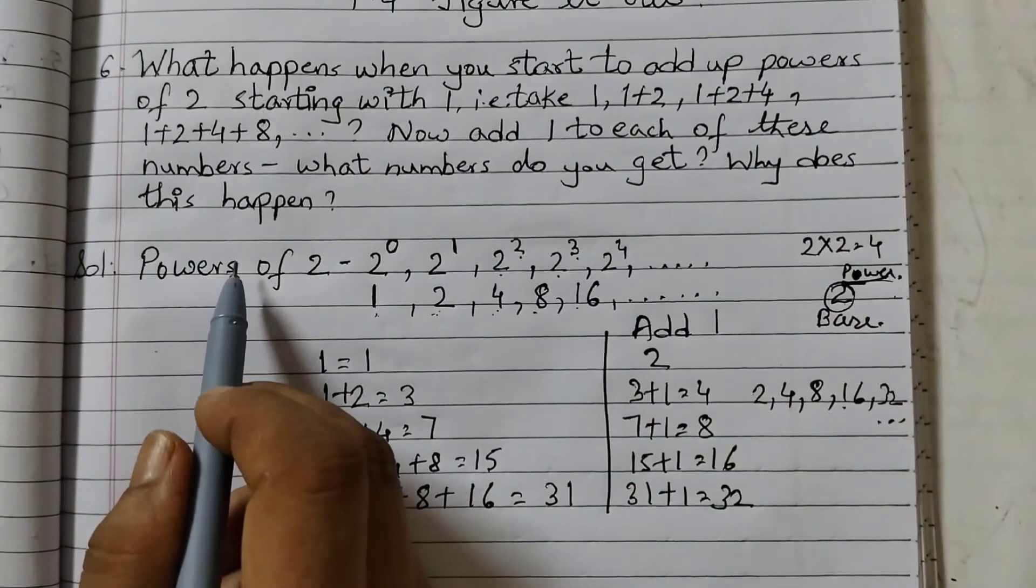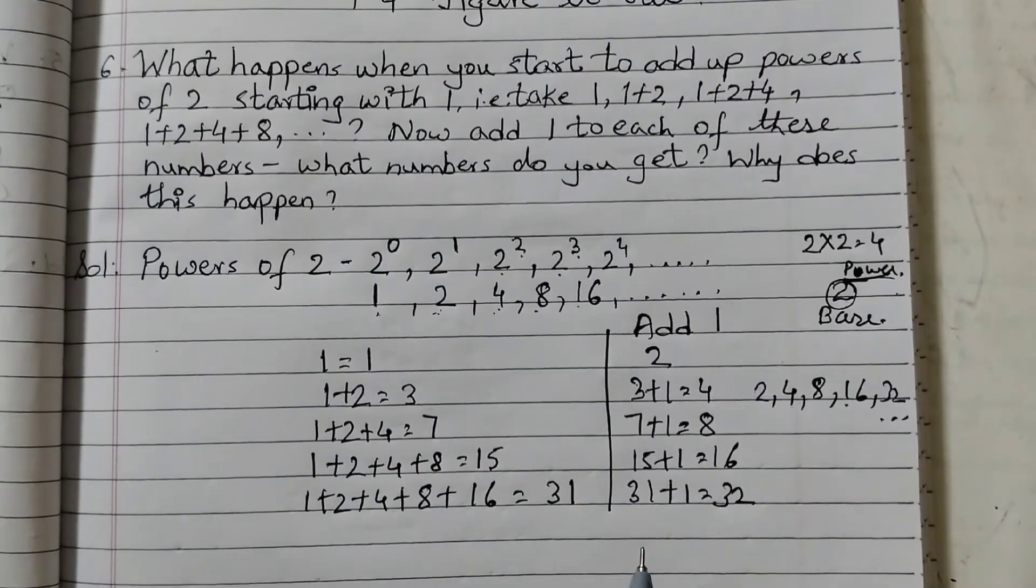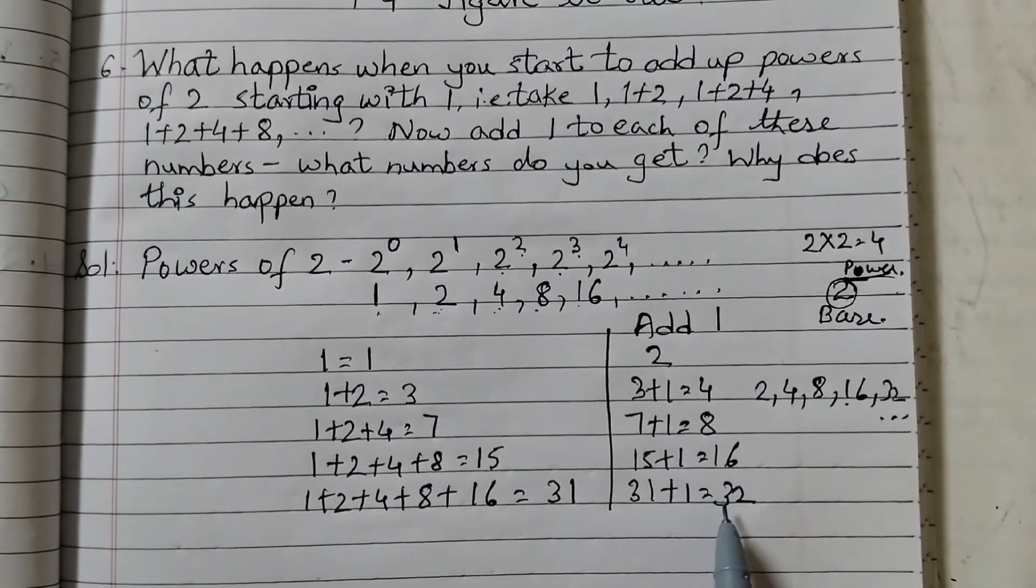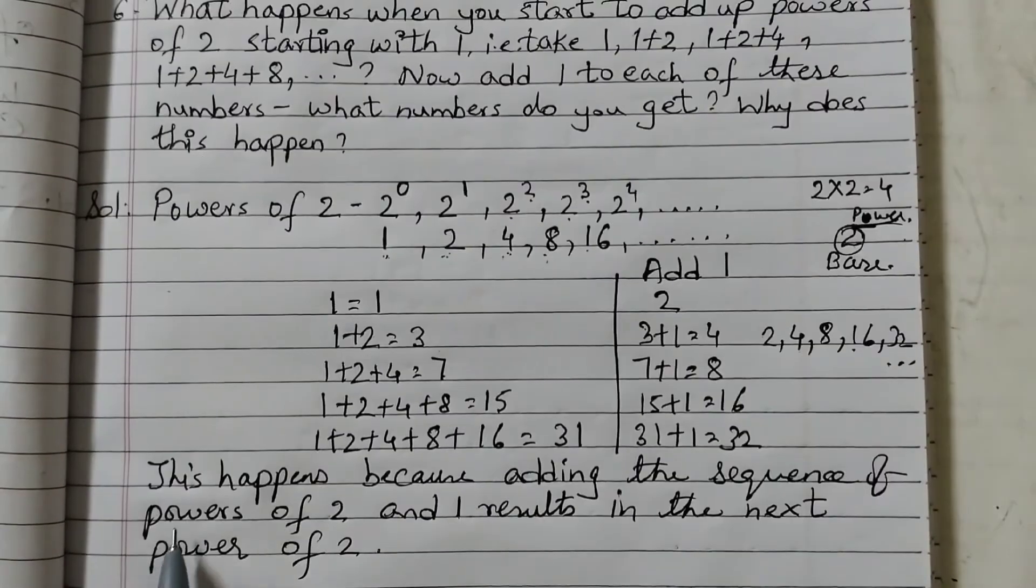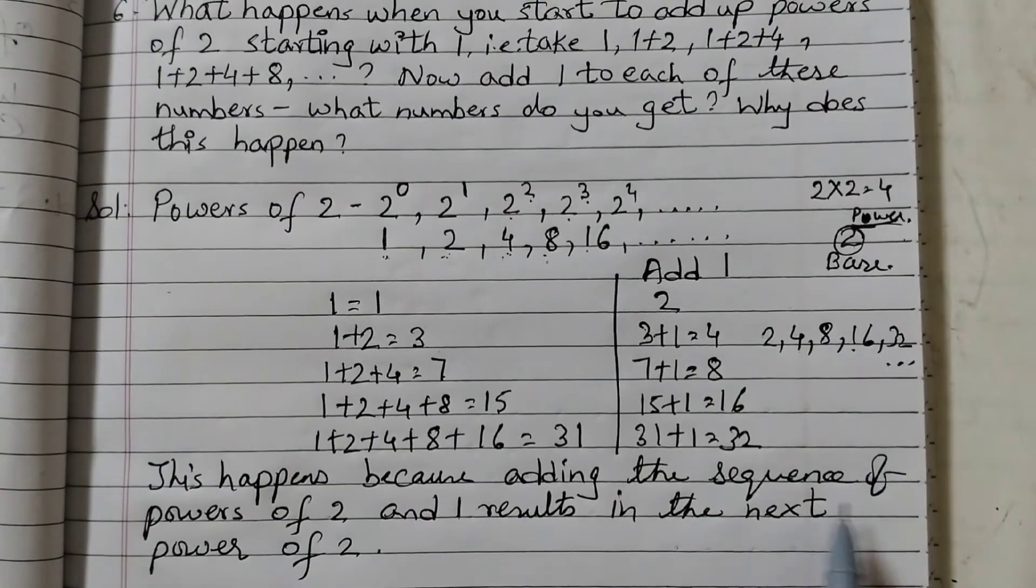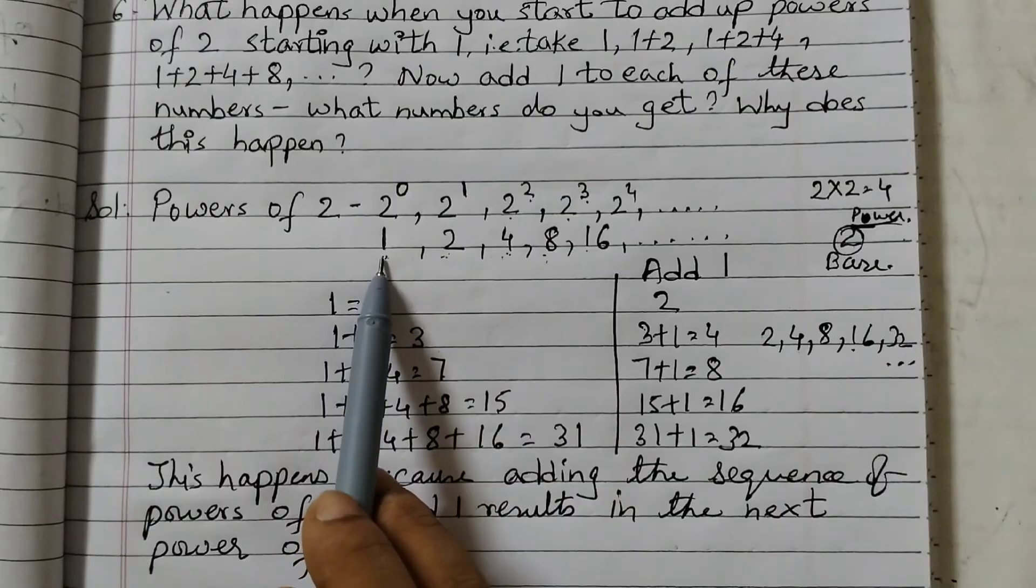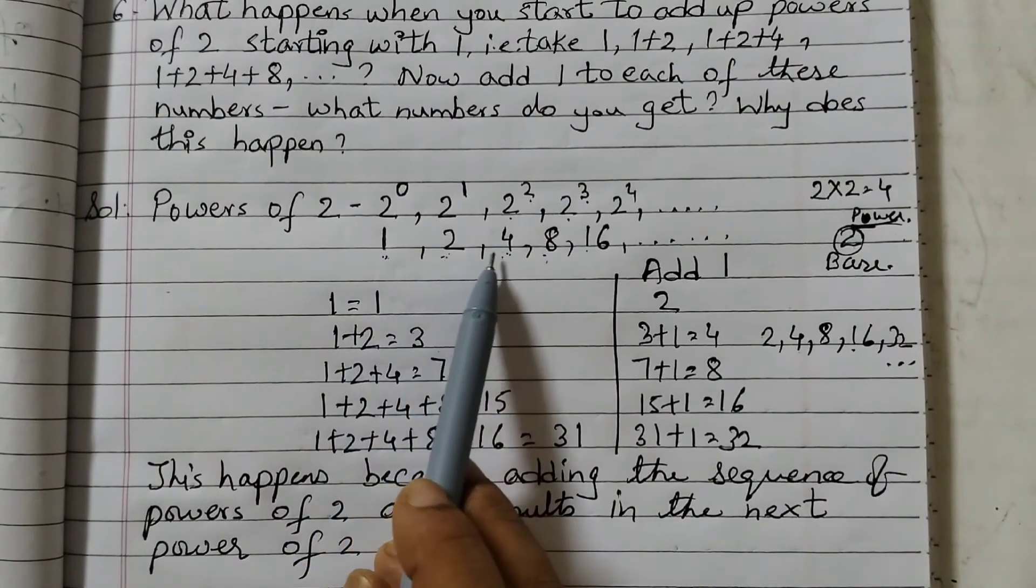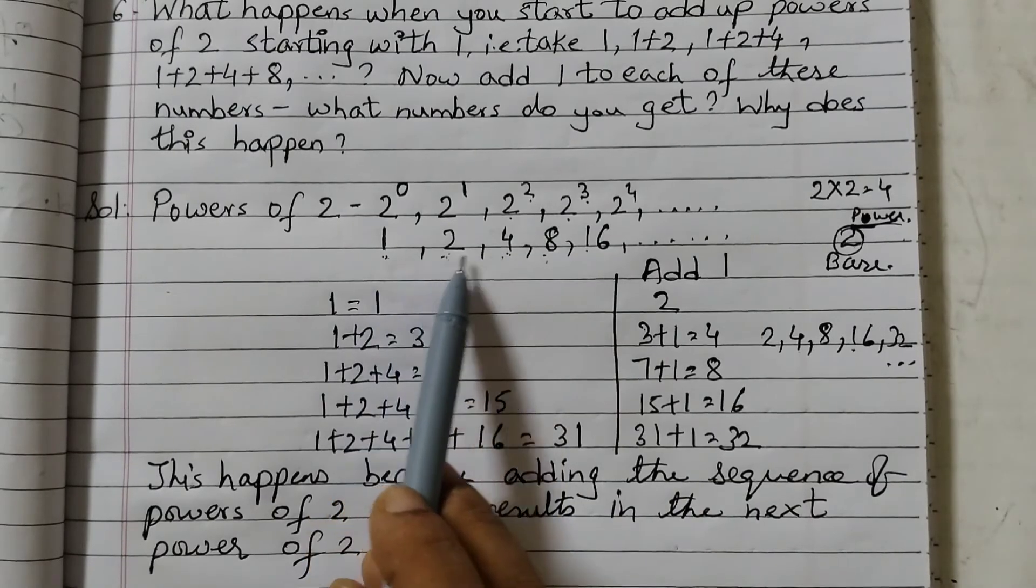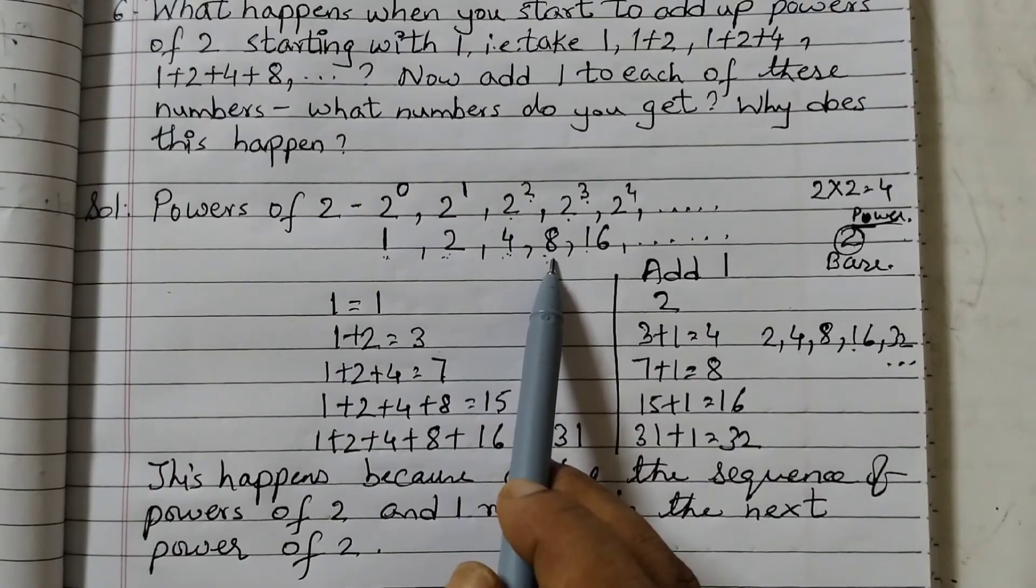Why does this happen? This happens because adding the sequence of powers of 2 and 1 results in the next power of 2. Now see here, 1, first number 1 plus 2 is 3. So 3 plus 1, when we do, we get 4, the next power of 2. 1 plus 2 plus 4, when we do, we get 7 plus 1, we get the next power of 2.